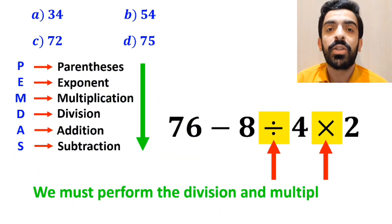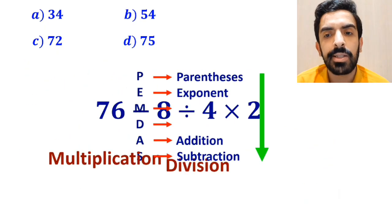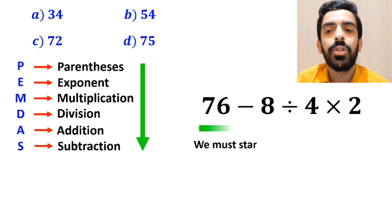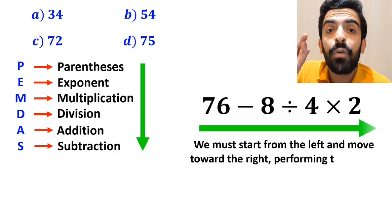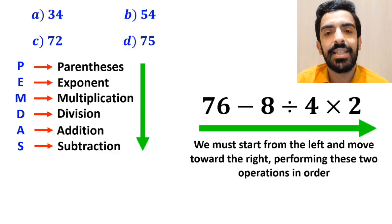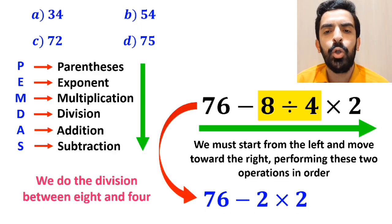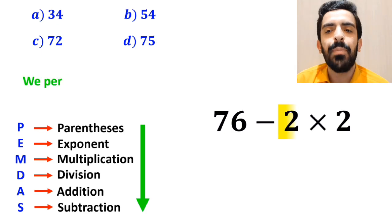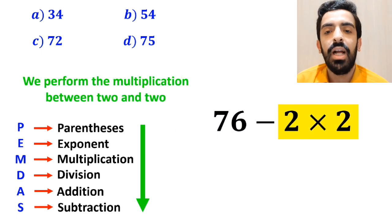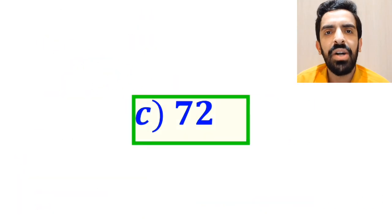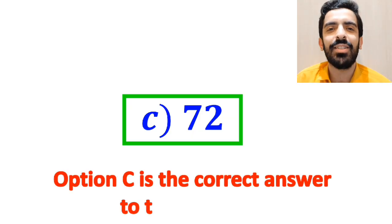Then we must perform the division and multiplication. It's important to understand that in PEMDAS, multiplication and division have the same level of priority. In this situation, we start from the left and move toward the right. So first we do the division between 8 and 4, simplifying to 76 minus 2, then times 2. In the final step, we perform the multiplication between 2 and 2, simplifying to 76 minus 4. Finally, the value of this expression is 72. Therefore, option C is the correct answer to this question.